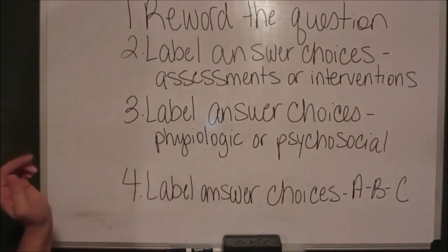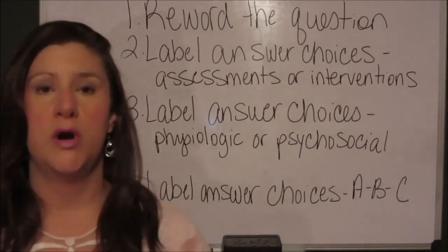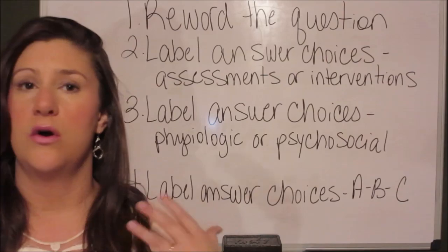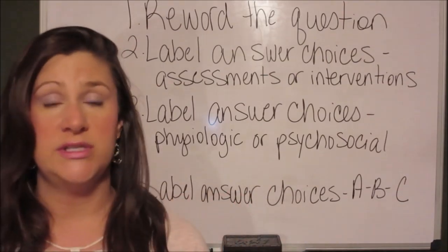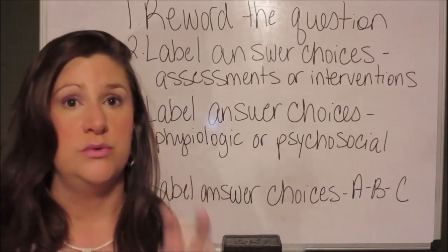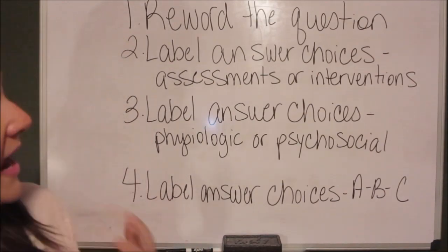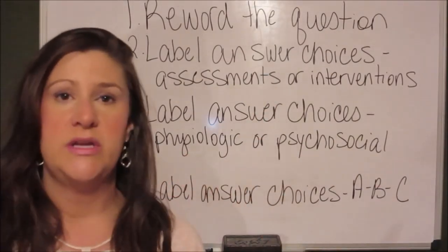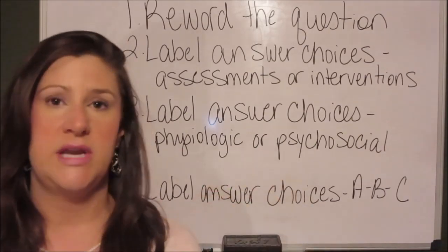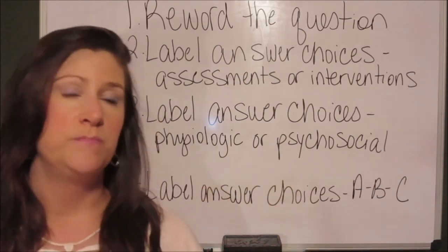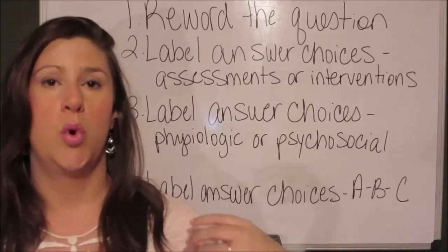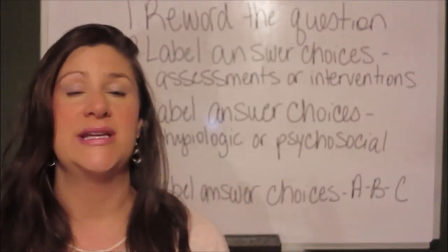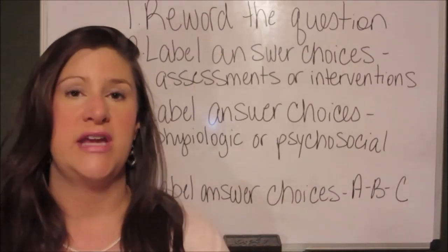Number 2: look at your answer choices — or, as we nurse educators call them, the distractors. They're called distractors for a reason. There are typically 3 incorrect answer choices and 1 correct one. Those other 3 are there to distract you from the correct answer. Step 2: label every single answer choice as either an assessment or an intervention. Is the nurse listening to breath sounds or taking a temperature? That's an assessment. Is the nurse raising the head of the bed, giving a medication, or calling the provider? Those are all interventions — the nurse is doing something, taking action to change the patient's situation.